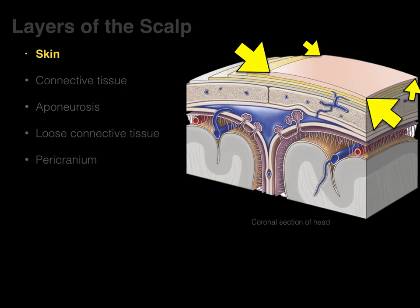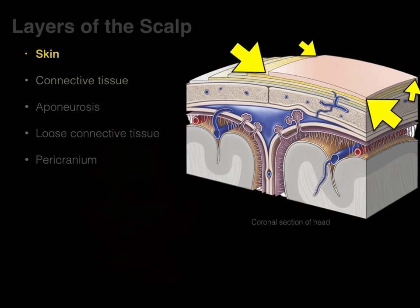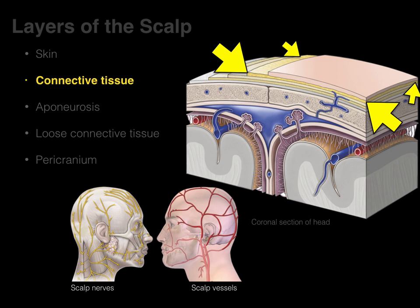The skin is the epidermis and dermis, and has hair follicles and sebaceous glands. The hair follicles help conserve heat and also serve aesthetic and social purposes. The connective tissue layer is basically adipose or loose adipose tissue — fat — that's deep to the skin, and that's what houses many of the terminal ends of the cutaneous nerves and blood vessels.